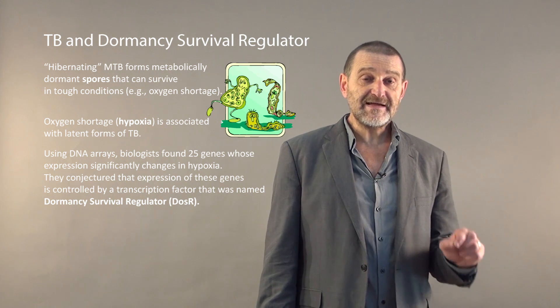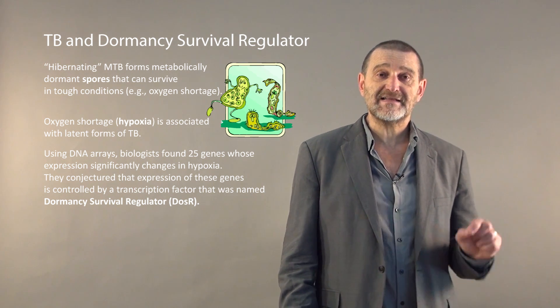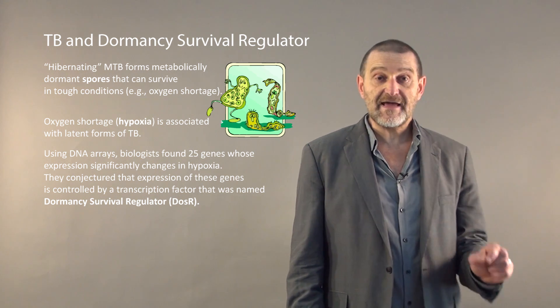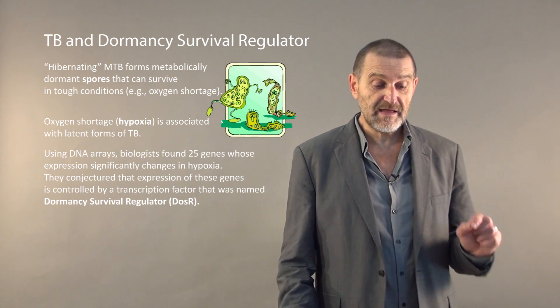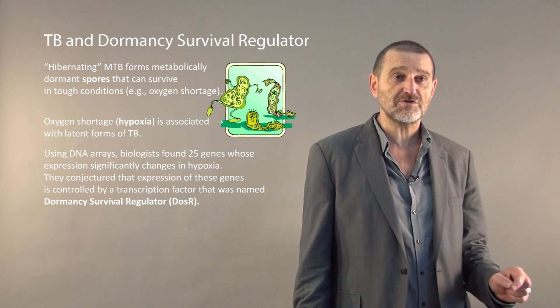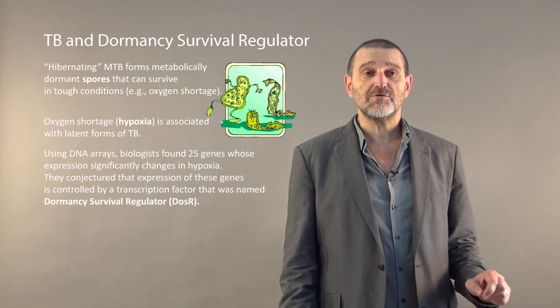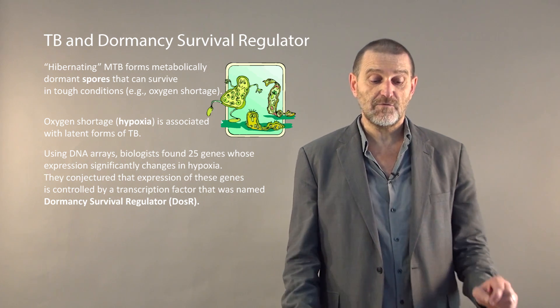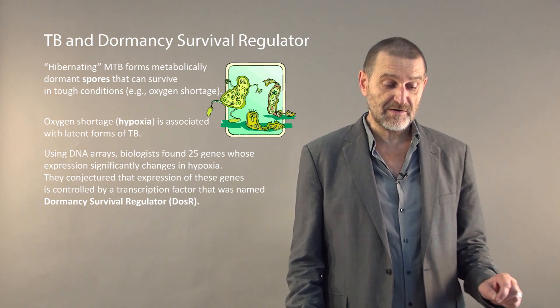MTB has an ability to form dormant spores where metabolism is shut down, and in such sporulated form it can survive in very tough conditions, for example in conditions of food shortage or oxygen shortage. Oxygen shortage, called hypoxia, is associated with latent forms of tuberculosis.